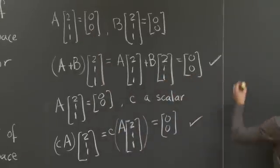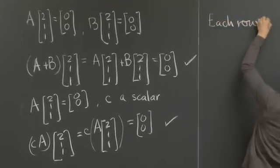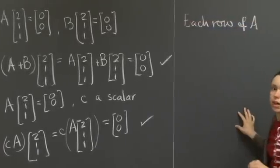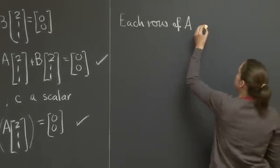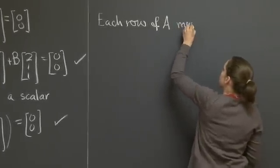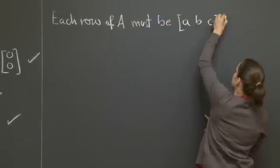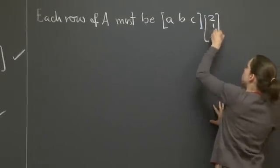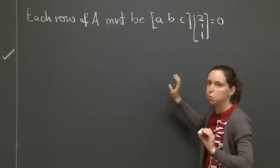Each row of a matrix A in this vector subspace must satisfy, must be A, B, C, 2, 1, 1 equal to 0. This is not really a good sentence, but you understand.